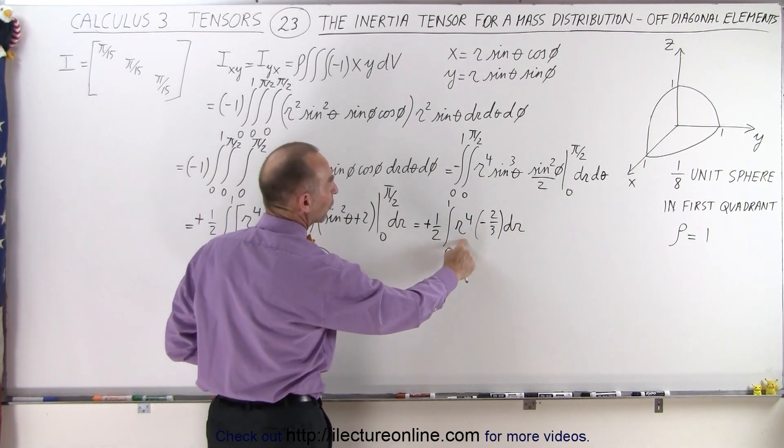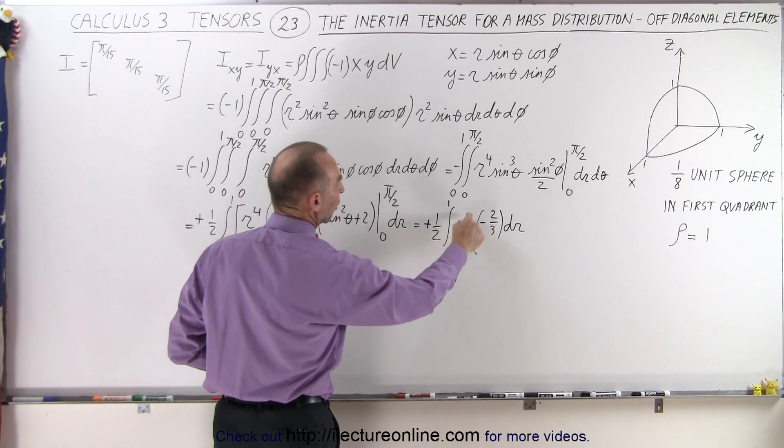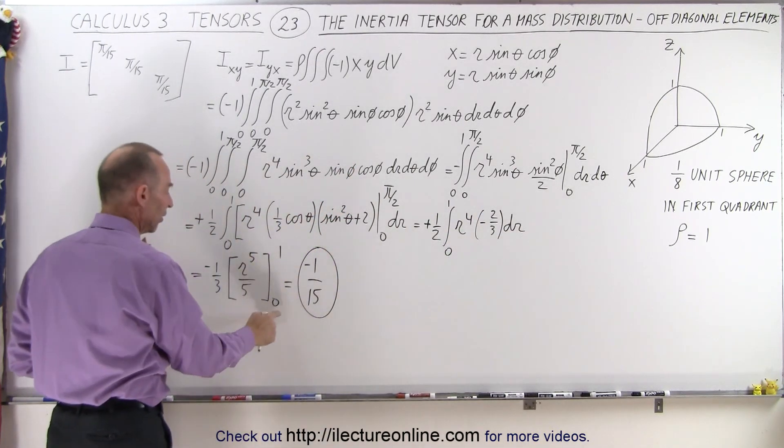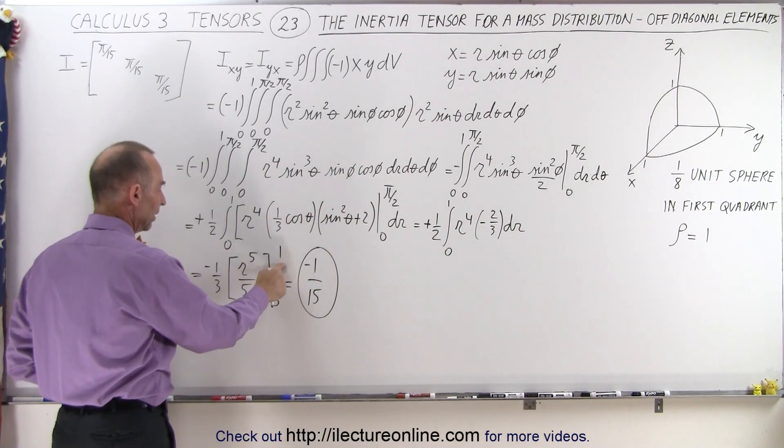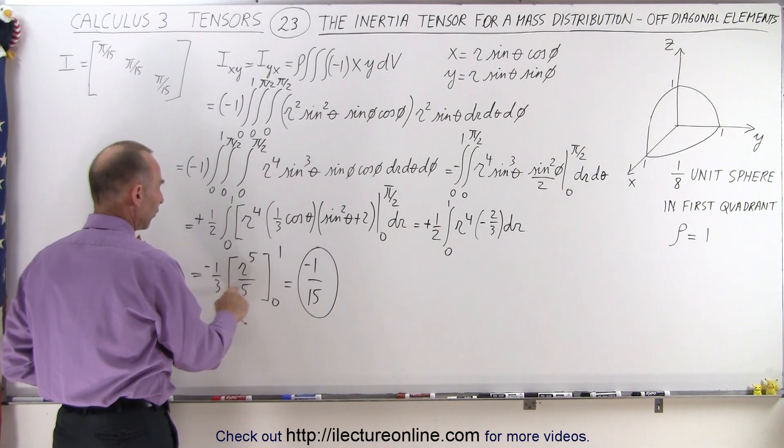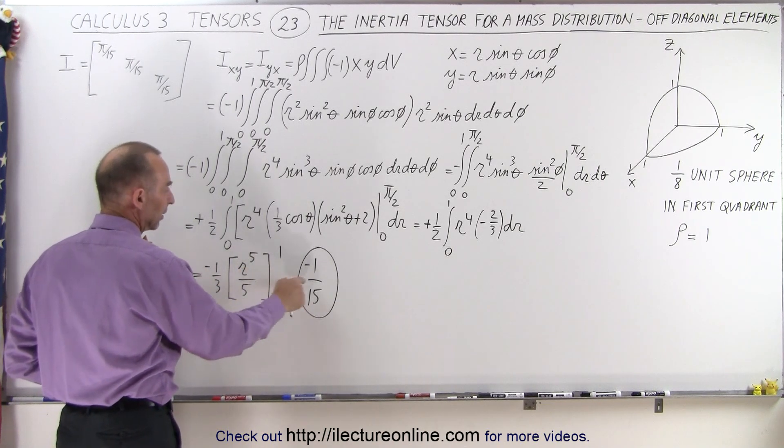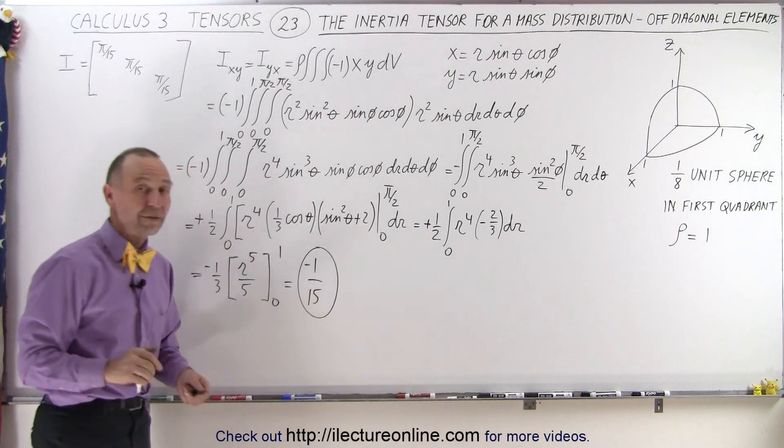And now we're ready to integrate r to the 4 dr, that becomes r to the 5th over 5. The limits are from 0 to 1. We have minus 1 over 15 times 1, and so we end up with minus 1 over 15.